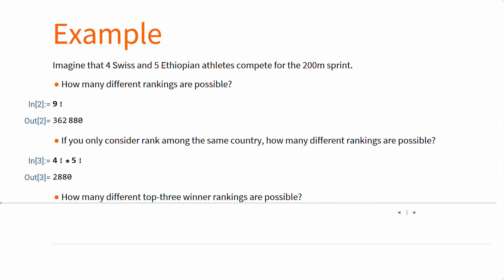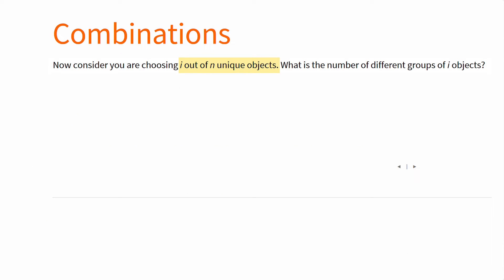If you only want 3 winners out of 9, then you just count 9 times 8 times 7. Now consider you choose i unordered objects out of n objects. What is the number of different groups of i objects? Like permutations, the objects are taken, not replaced. Unlike permutations, objects are unordered. So we must find a way to ignore ordering.